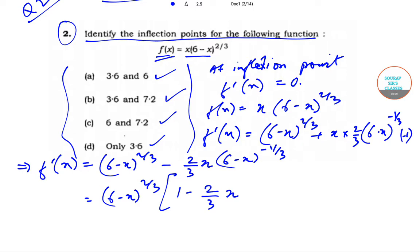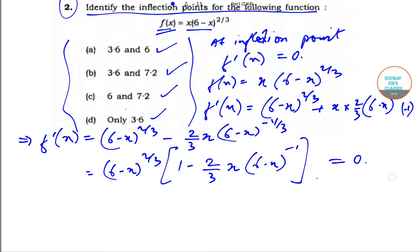So we get (6-x)^(2/3) times [1 - 2/3 x/(6-x)]. This is what we'll get. Now if this is equal to 0 for inflection point, then this implies either...